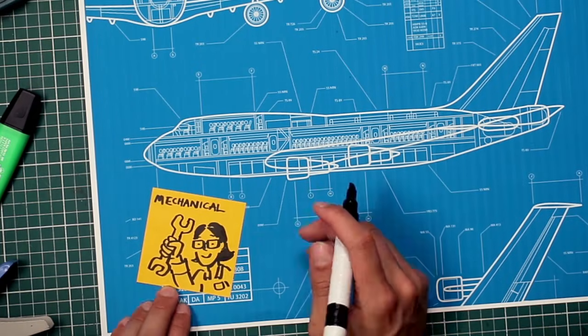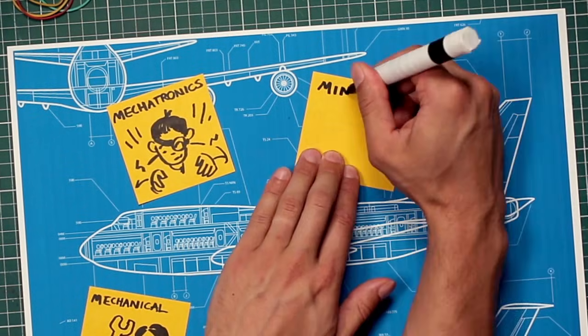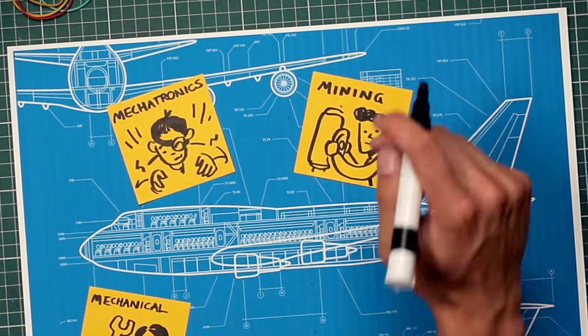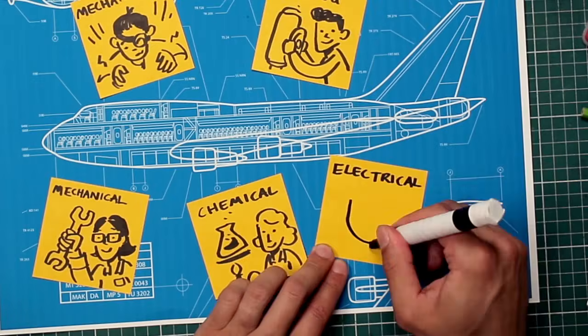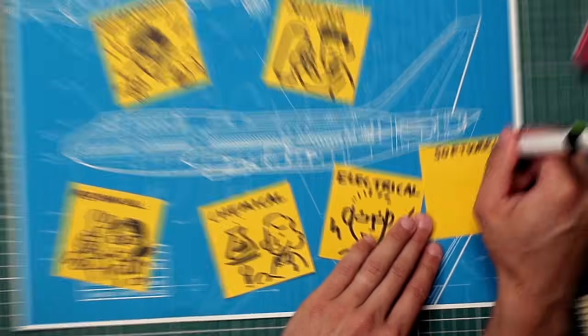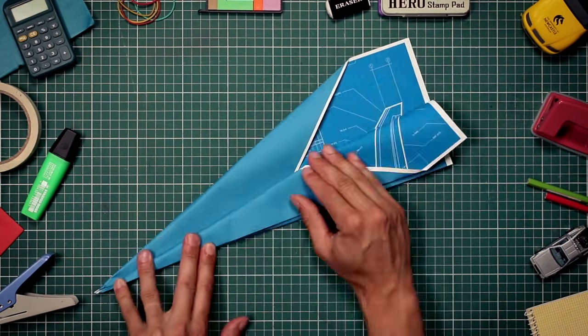A mechanical engineer designed the engine. A mechatronics engineer devised the controls. The fuel? Extracted by mining engineers and refined by chemical engineers. The navigation systems? Electrical and software engineers created those. Yep, a whole team of engineers.